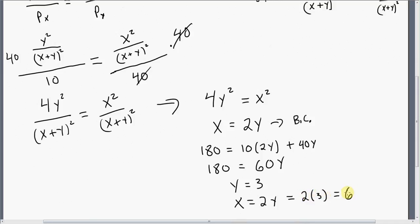That would be our utility maximizing consumption bundle. The consumer would choose to buy 6 units of good X at $10 apiece, and 3 units of good Y at $40 apiece. I hope you found this video helpful.